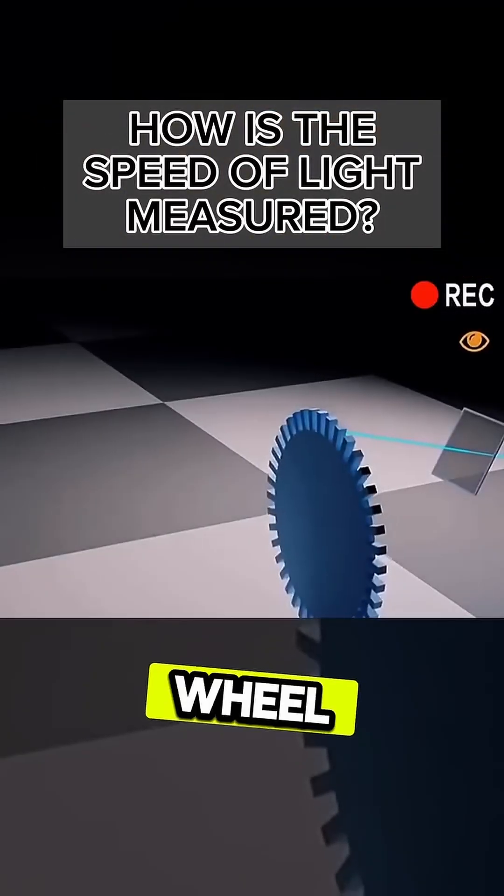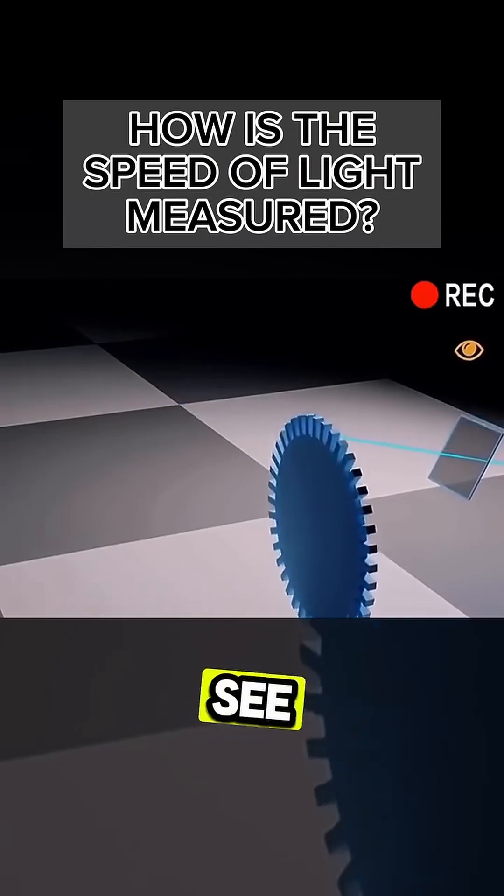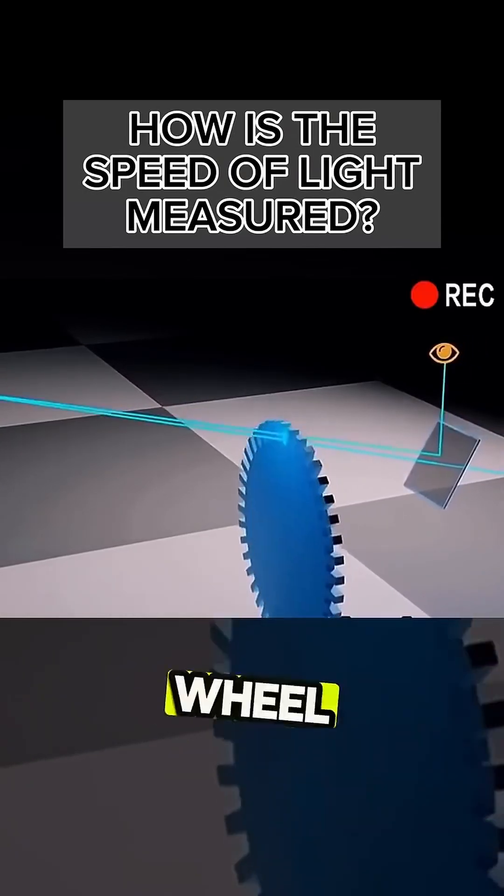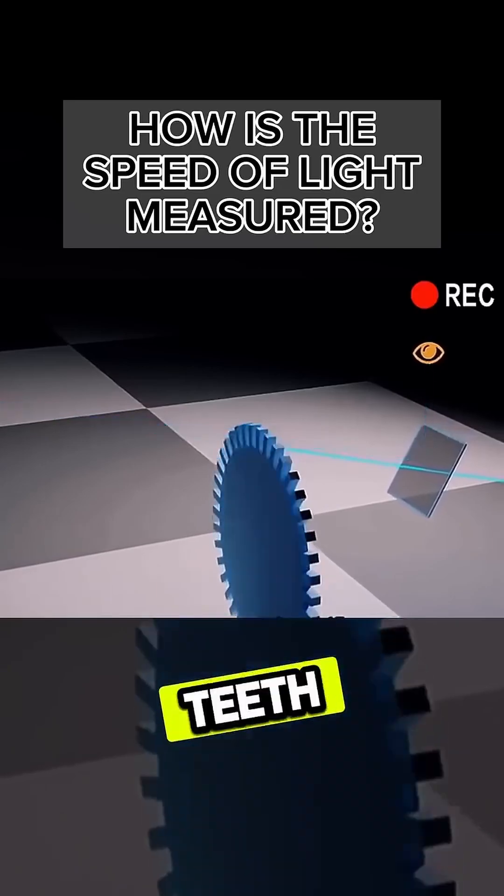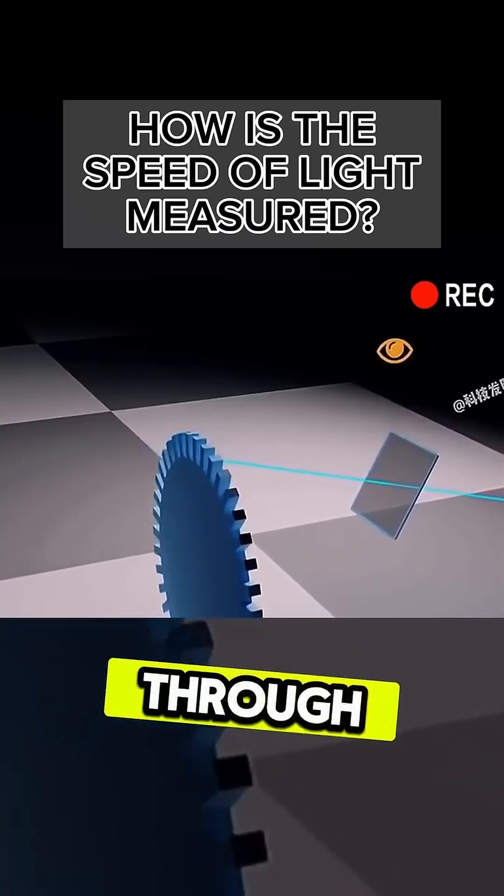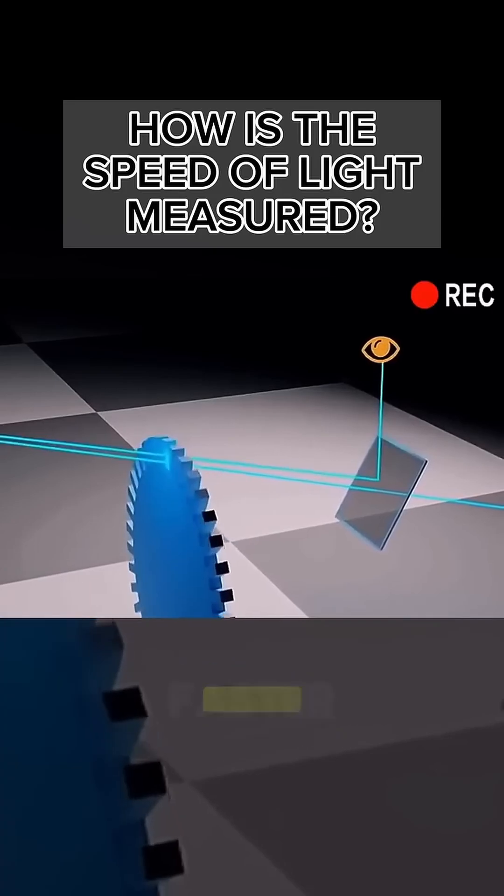But what if we spin the wheel? You'll find that the light you see keeps flickering. Why is that? Because when the wheel is spinning, sometimes the teeth block the light, and sometimes there's a gap that lets the light through. What if we make the gears turn faster?